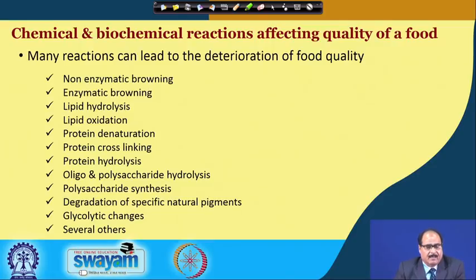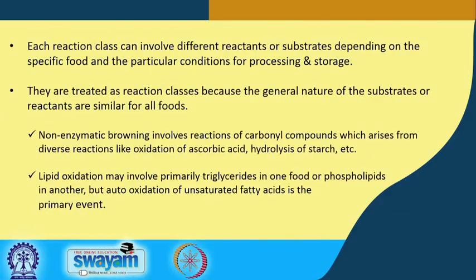These major reactions may be non-enzymatic browning, enzymatic browning, lipid hydrolysis, oxidation, protein denaturation, cross-linking, protein hydrolysis, oligo- and polysaccharide hydrolysis, polysaccharide synthesis, degradation of certain natural pigments, glycolytic changes and so on. Each reaction can involve different reactants or substrates depending on the specific food and conditions for processing and storage. They are treated as reaction classes because the general nature of these substrates or reactants is similar for all foods.